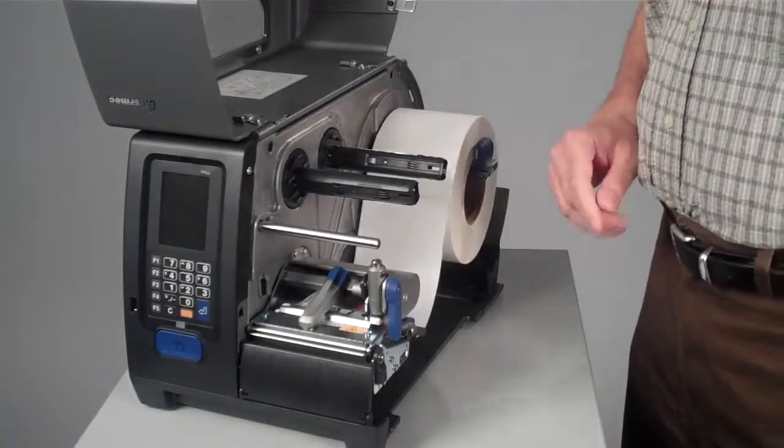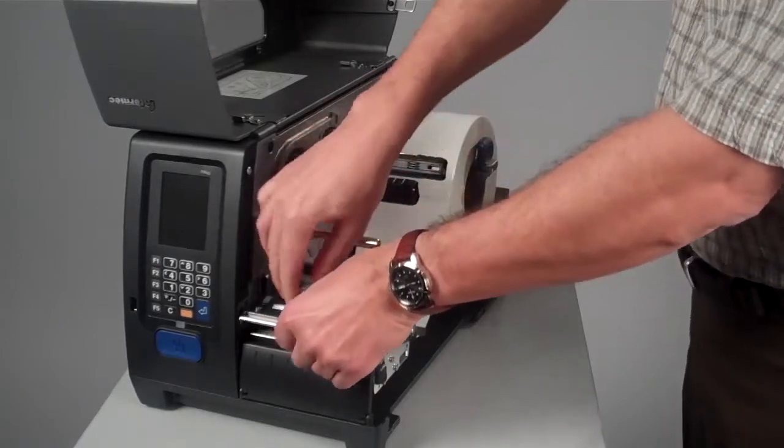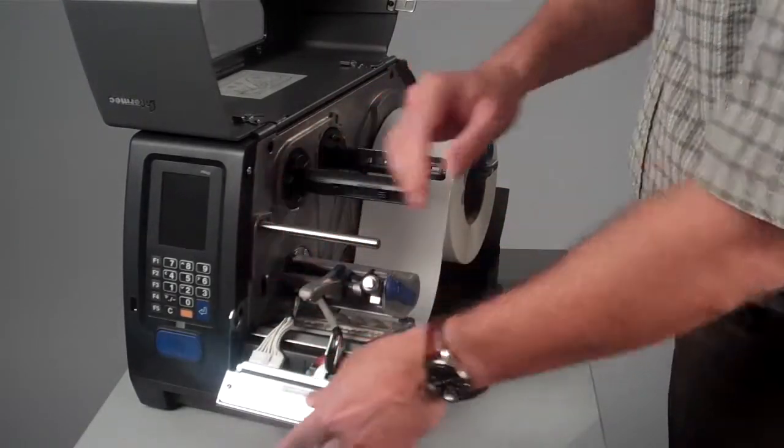Intermec PM43 print head is a magnetic print head, easily removable without any tools, jigs, or most importantly, loose parts.